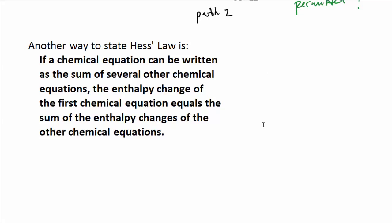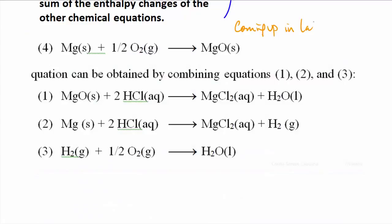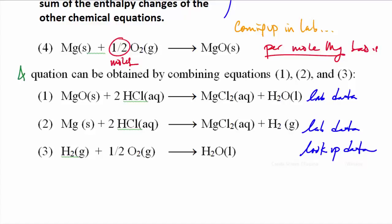So I guess the next question's got to be why should that be. Well, here's a reaction system. This is the one we're talking about and it's coming up in lab, so let's have a look and see how this might work. Remember that these coefficients here are moles, so what we're looking for here is the enthalpy change per mole of magnesium. So the first two reactions will get this information from lab data, and the third one with the hydrogen oxygen gas will look up the data. So our equation 4 can be made by some combination of these other equations 1, 2, and 3.